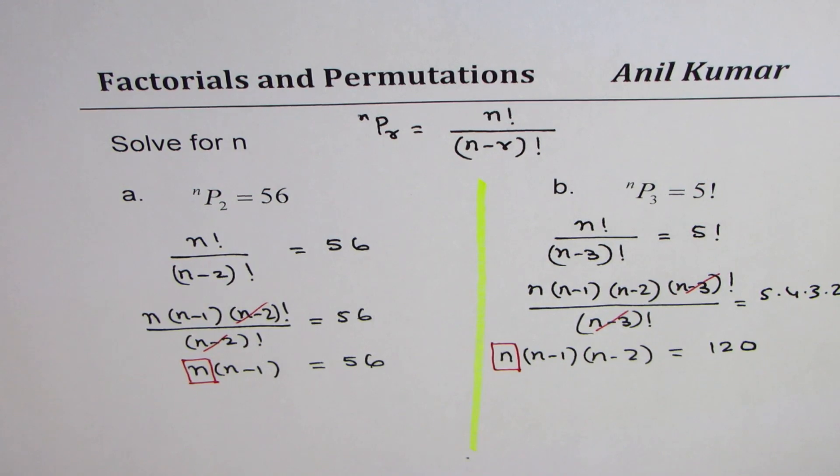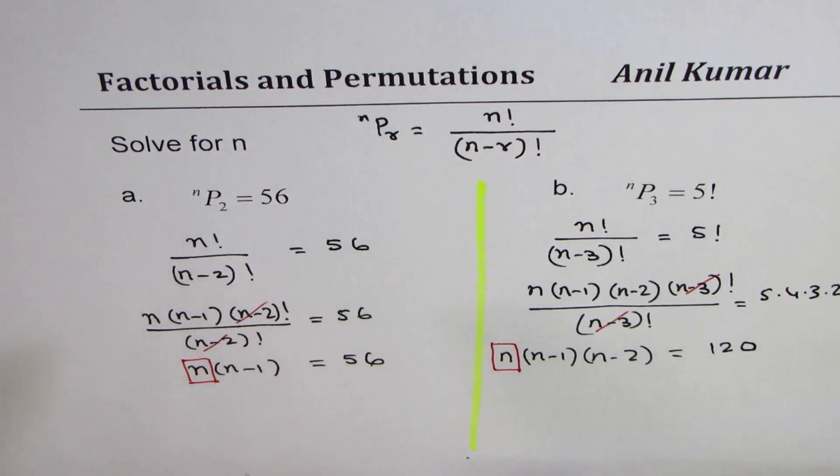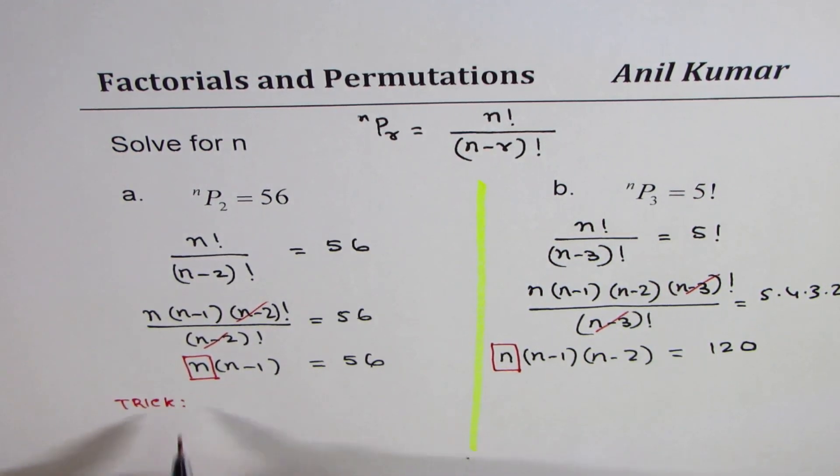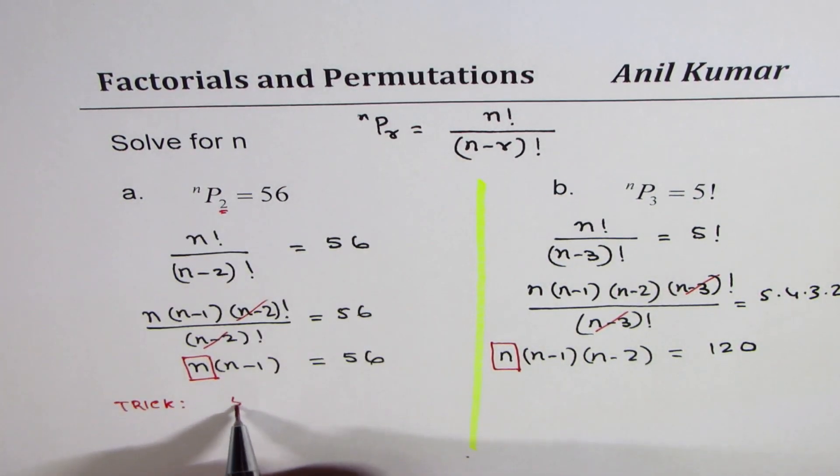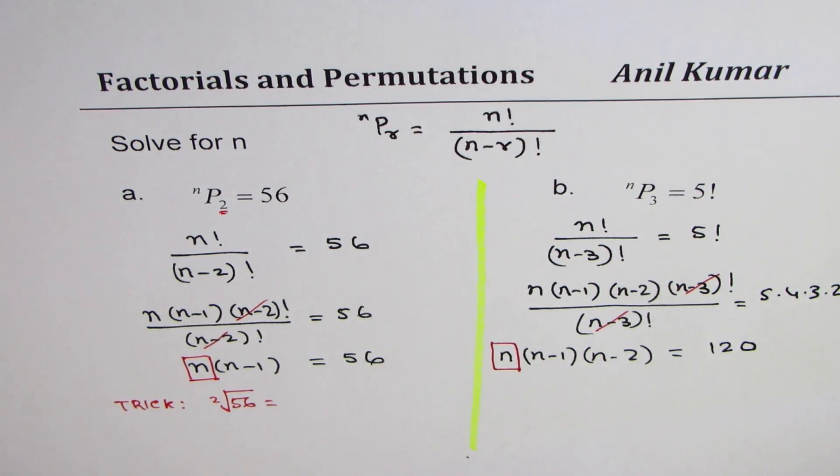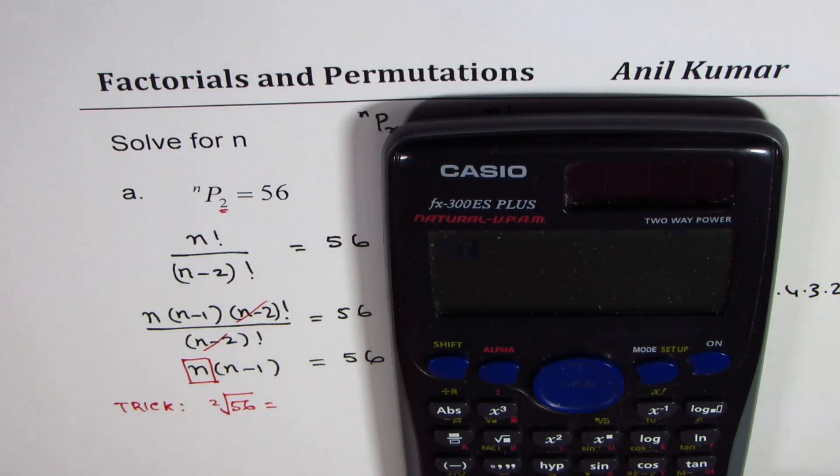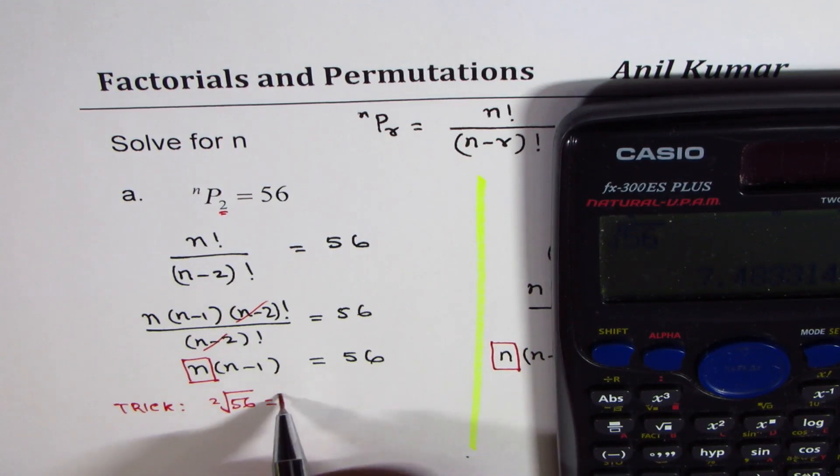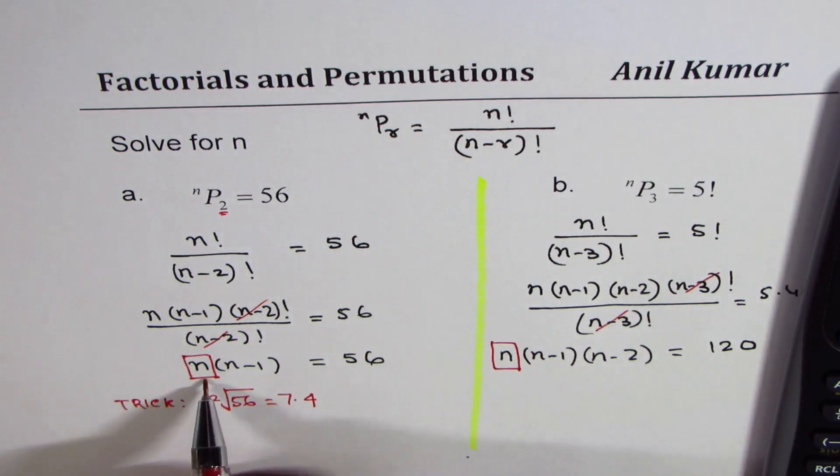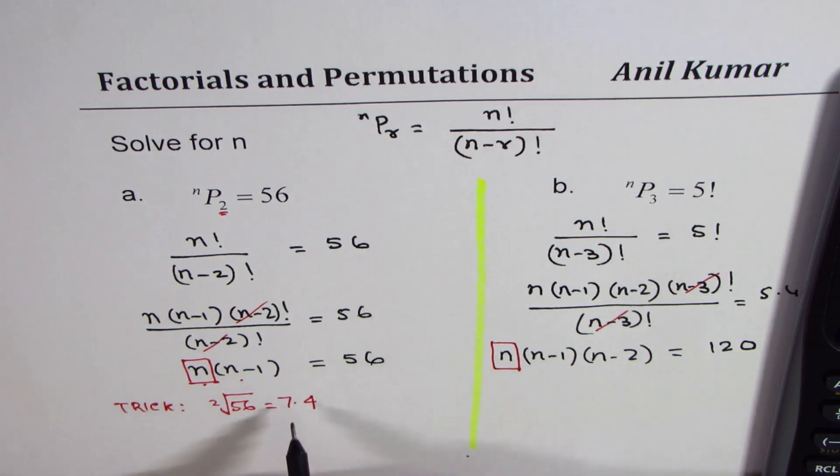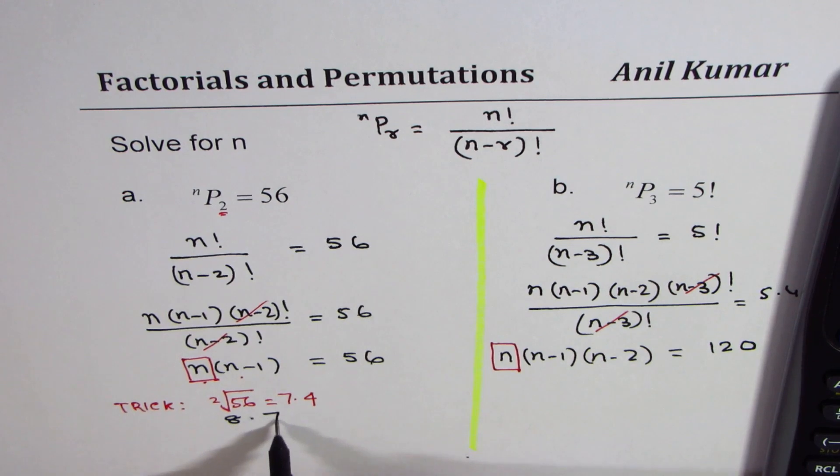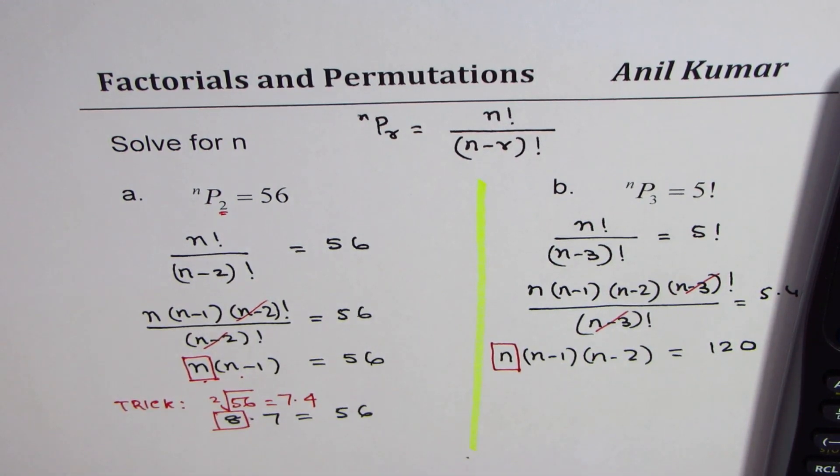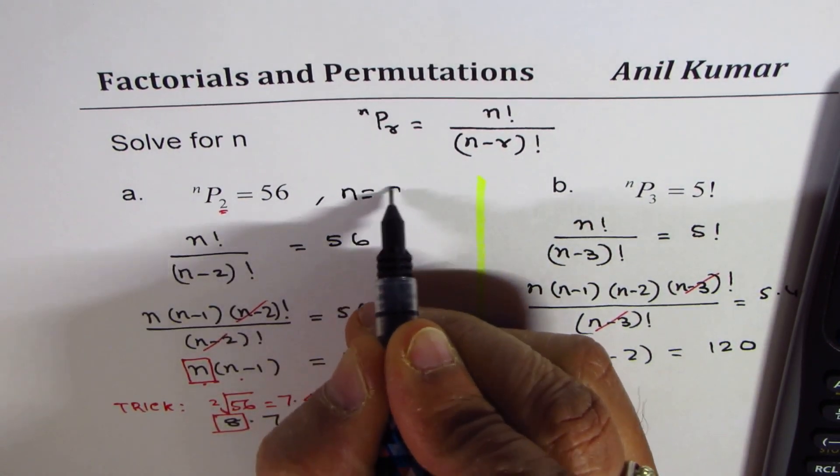And here, what I do is if I have 2 here, we'll do square root of 56. The trick is if this is 2, then we do square root of 56, and we get in decimals 7.4. So we know these two numbers are around 7.4, so what are the possible numbers? Obviously it is 8 times 7 equals 56, and so we get our answer. That means n should be 8.